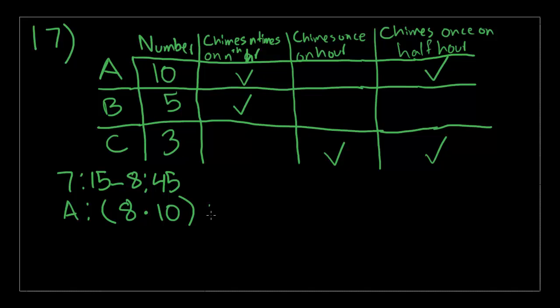We need to find now the number of chimes between 7:15 and 8:45. Let's first take clock A. Clock A, there are two different types of chimes. There's chimes n times on the nth hour. So the hour between this time is 8 o'clock. That's on the hour. So it'll chime 8 times. And there are 10 clocks. So you will hear 8 chimes within 10 clocks. So that's the total number of chimes for the 8 o'clock. Then you add this to another one, which is that it chimes once on the half hour. There's 7:30 and then there's 8:30. So that's two chimes times 10, which is the total number of A clocks.